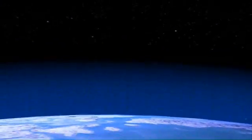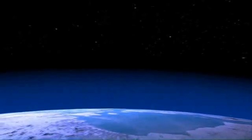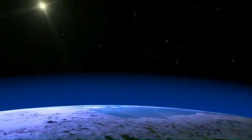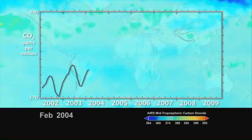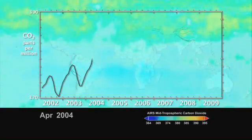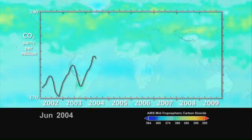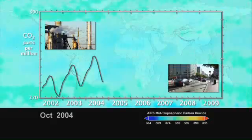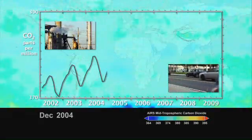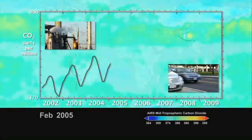Carbon dioxide is a naturally occurring gas in our atmosphere, and monitoring it is like watching our planet breathe. This animation shows the seasonal cycle of carbon dioxide and the increase of carbon dioxide every year due to human activity.